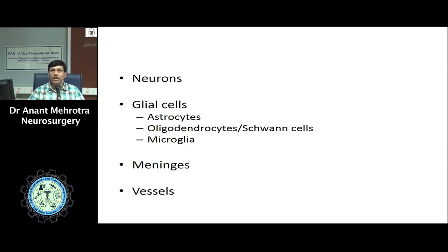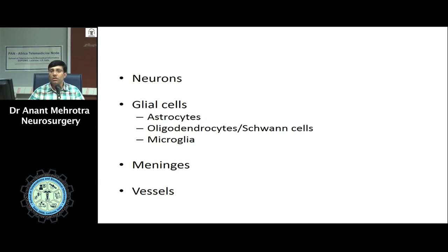The glial cells are of various types: astrocytes, oligodendrocytes, or microglial cells. Astrocytes are one of the most important among the glial cells, as they are in close proximity to neurons and are the main cells which provide support to neurons. Oligodendrocytes in the central nervous system and Schwann cells in the peripheral nervous system are responsible for formation of myelin, which increases the speed of impulse transmission. Microglial cells defend the brain from any invasion, infection, or inflammation.